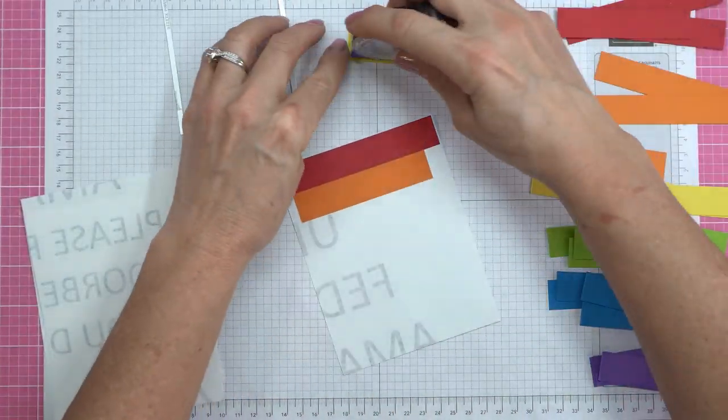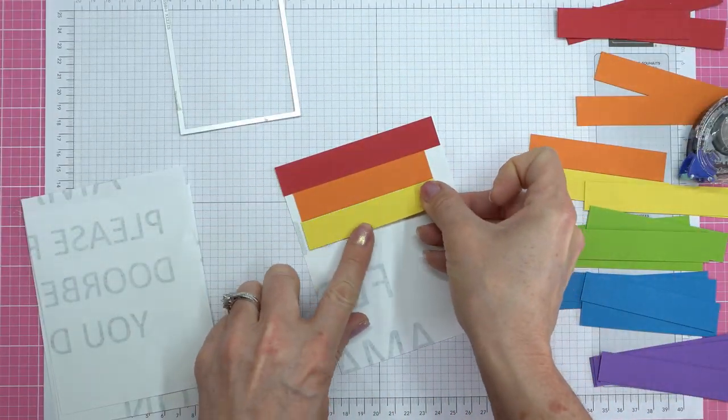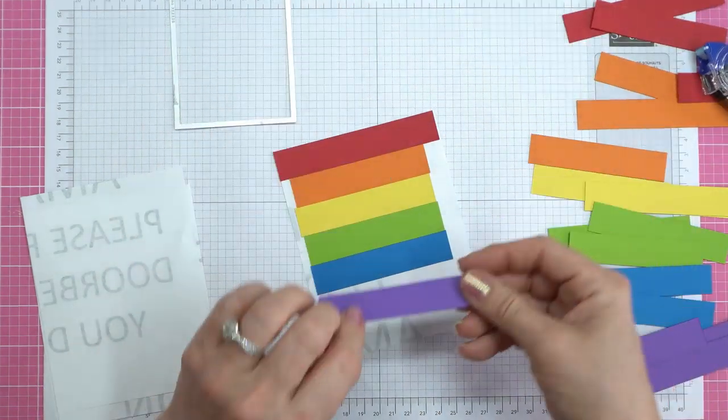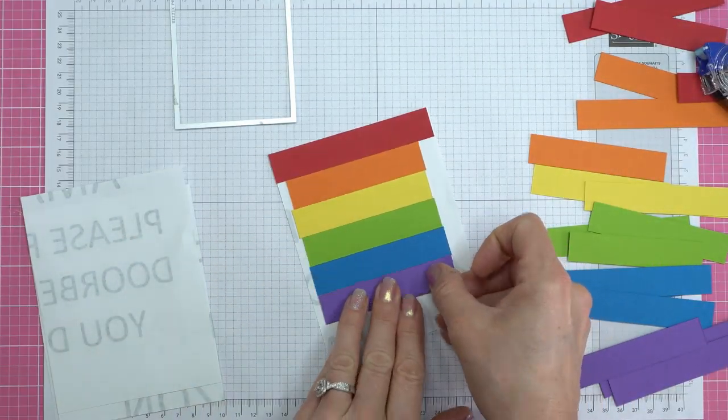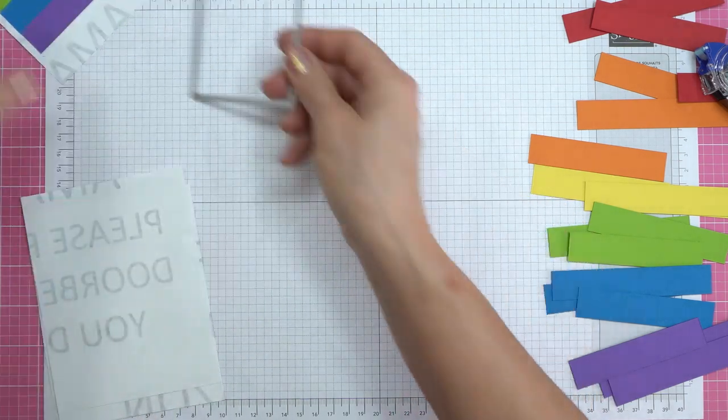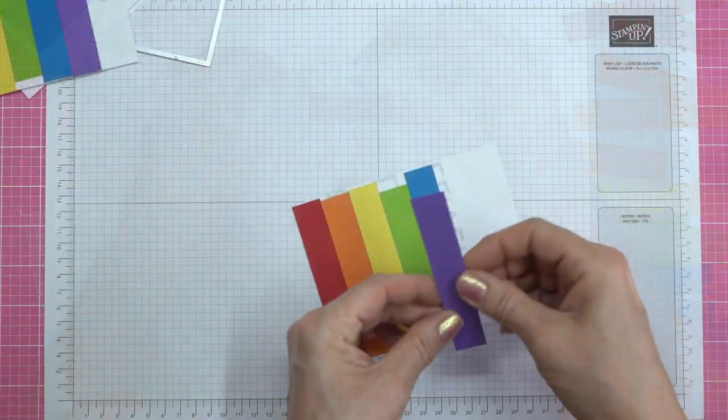Now you can pull out the third largest stitched rectangle die and lay it right over top of your strips. And that way you know that your strips are within the area that we want to cut. So I'm going to repeat this four times.